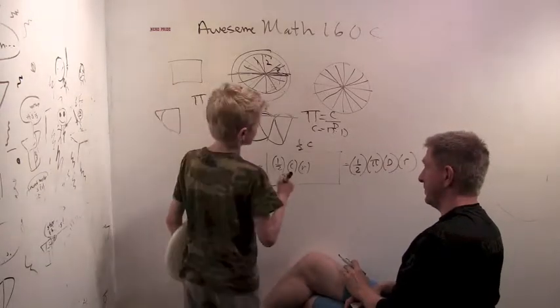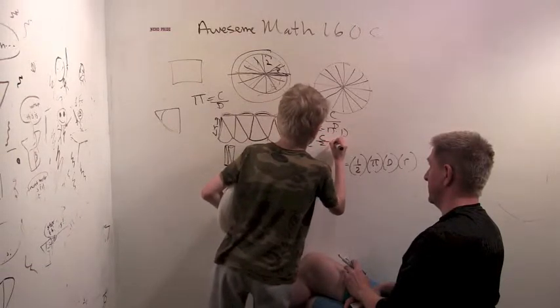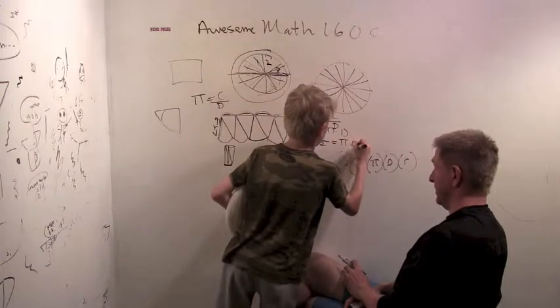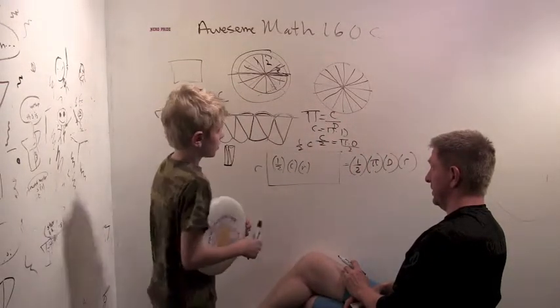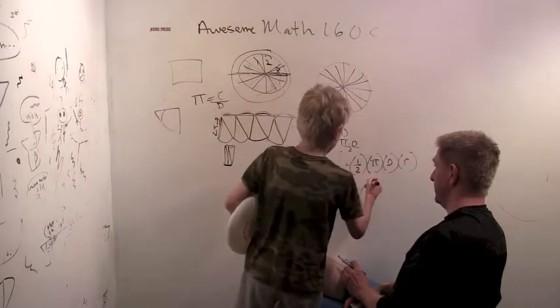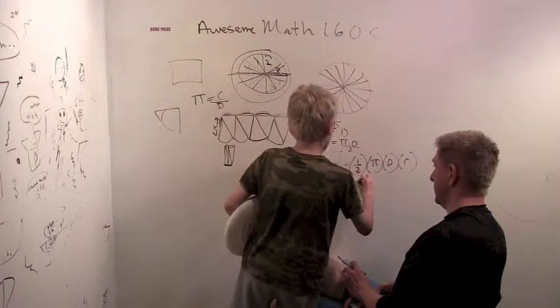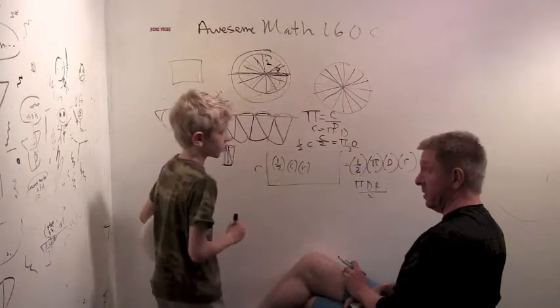So now... The circumference over two is pi times the diameter over two. Okay. So that means we can get this into an equation. So we have pi times the diameter times the radius all over two. Very good.